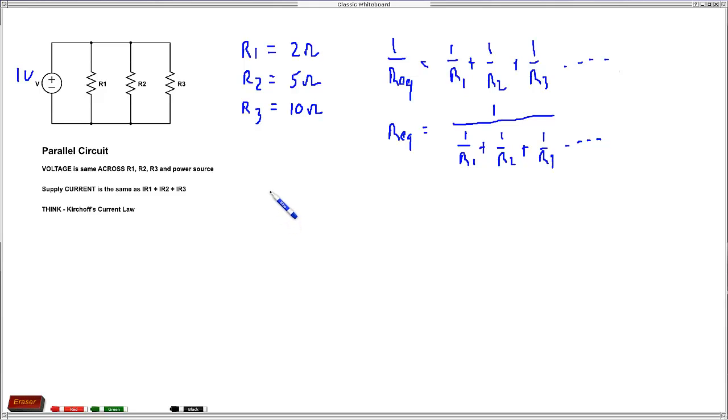For the first resistor, we can find the current by just saying IR1 equals 1 volt over 2 ohms, which is 0.5 amps.